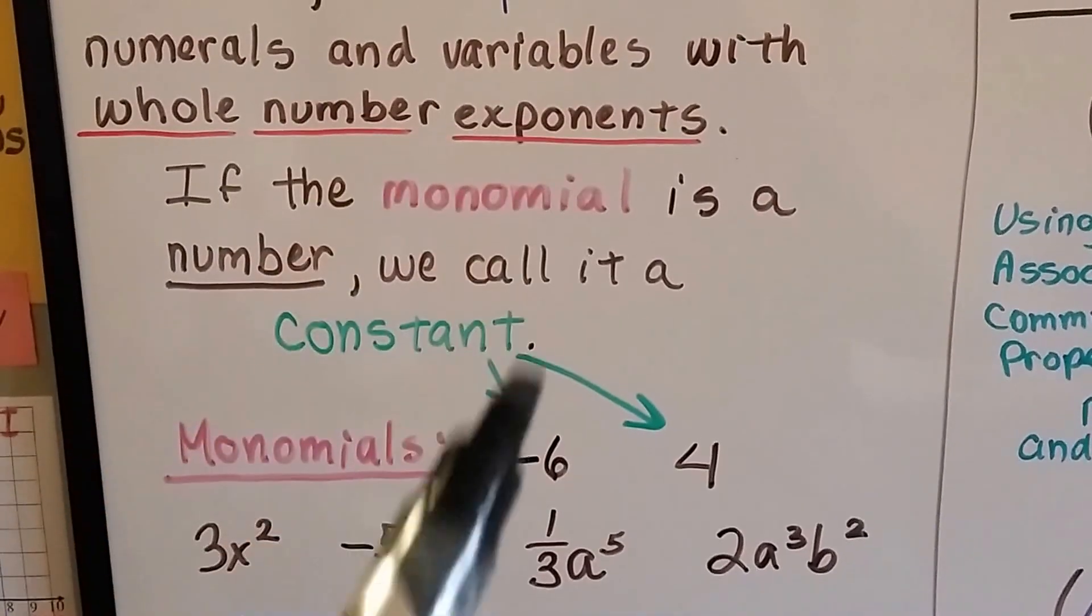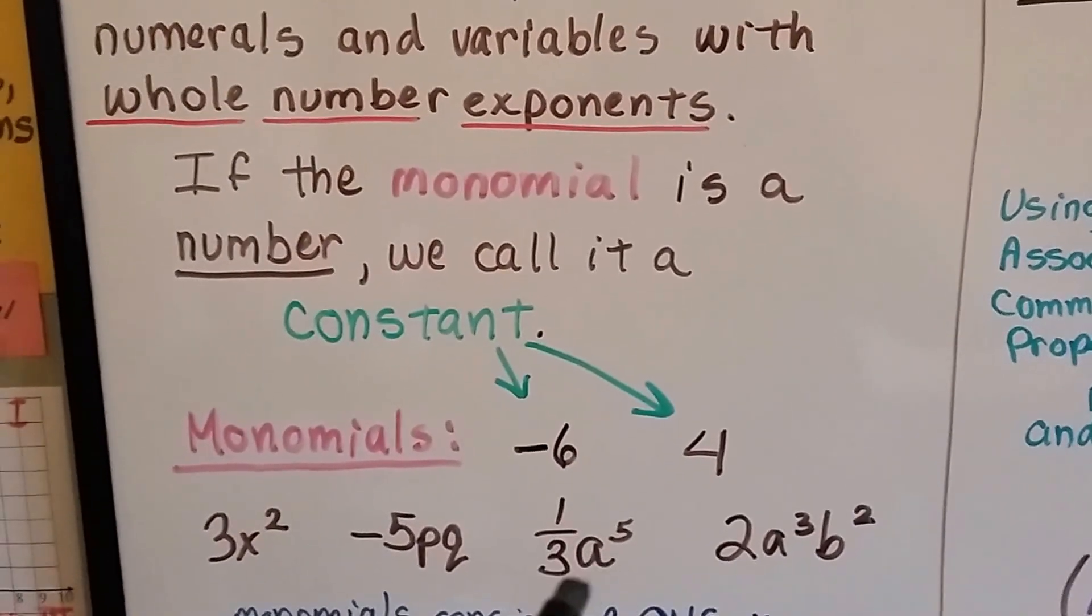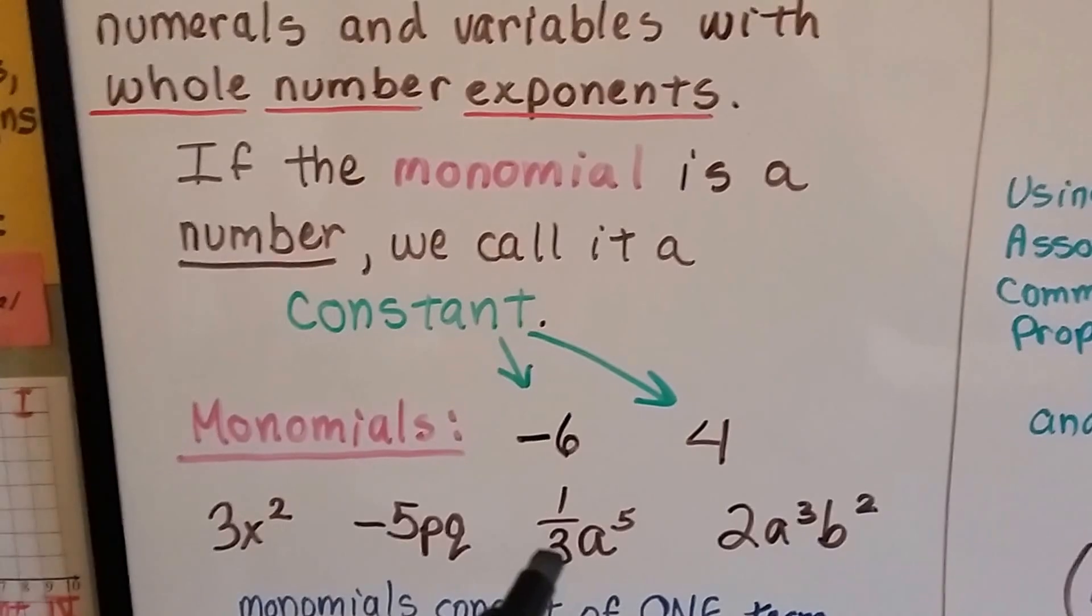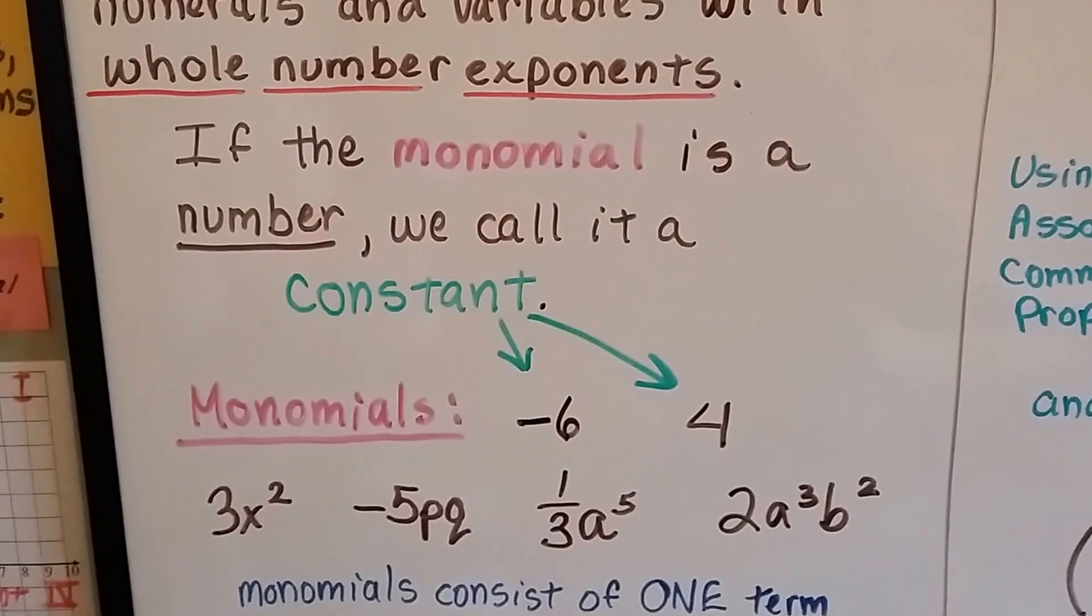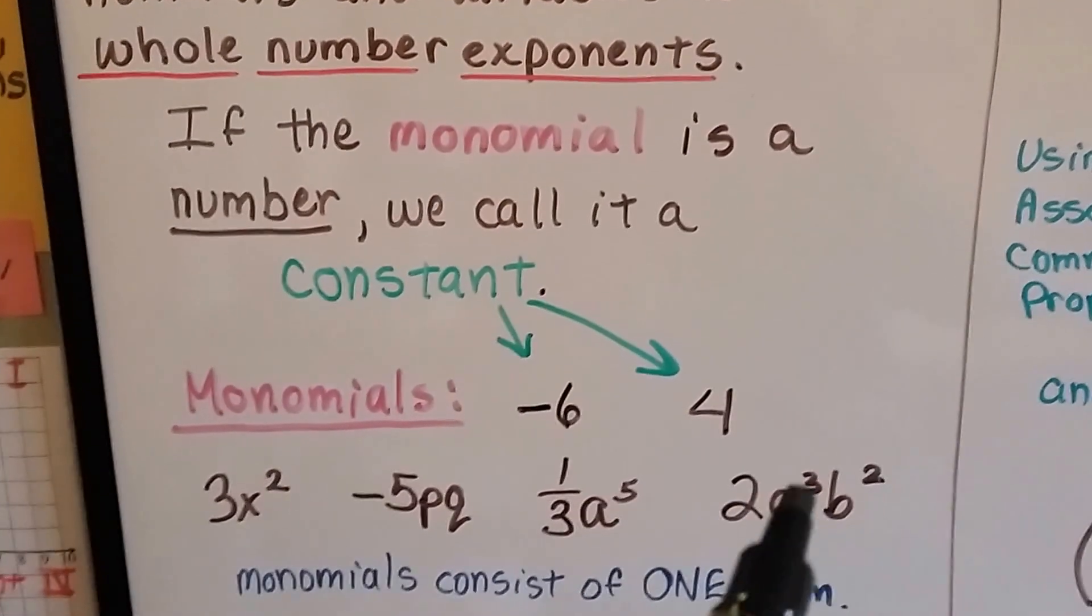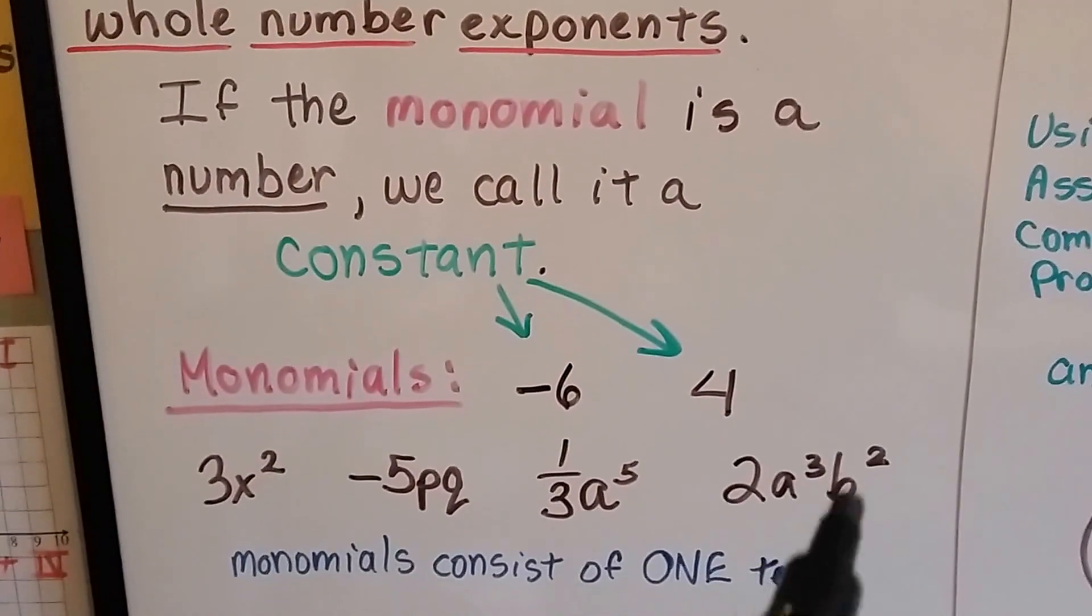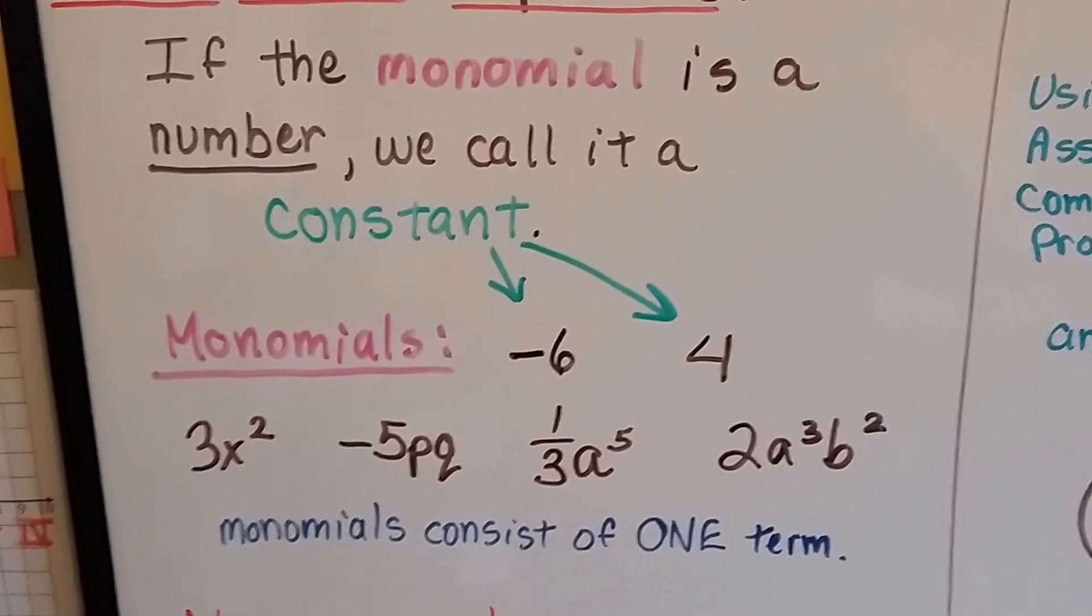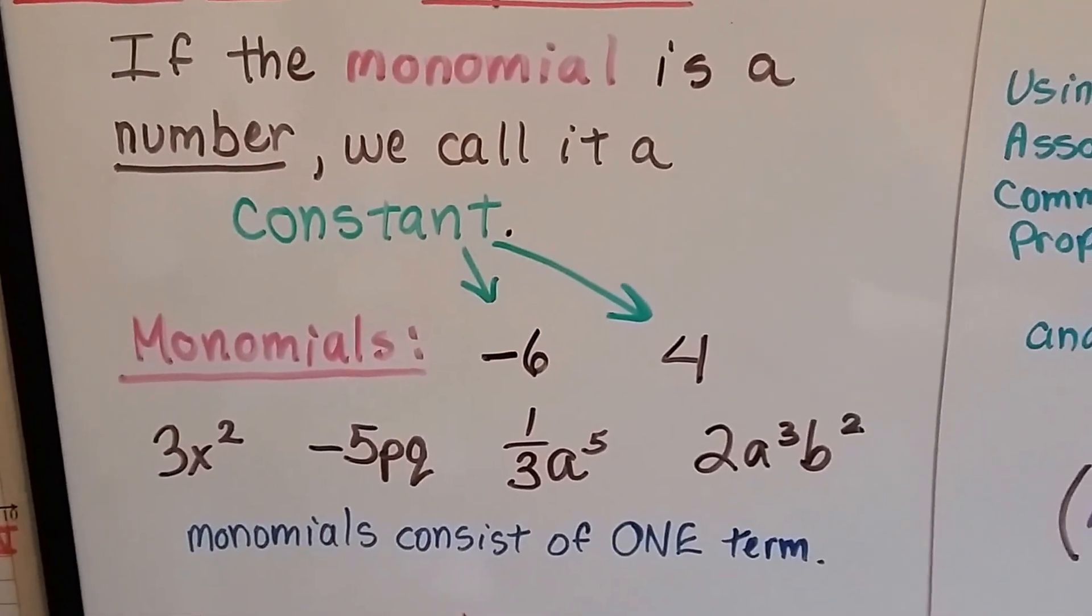Now remember we said the variables are whole numbers. So it can have a fraction coefficient, because that's a whole number exponent. And 2a to the third power b to the second power is a monomial. These all consist of one algebraic term.